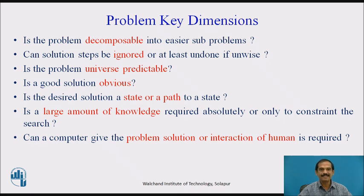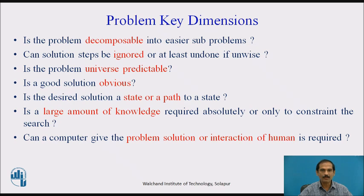Can solution steps be ignored or at least undone if unwise? Is the problem universal and predictable? Is a good solution obvious? Is the desired solution a state or a path to a state? Is a large amount of knowledge required absolutely, or only as a constraint for the particular search?